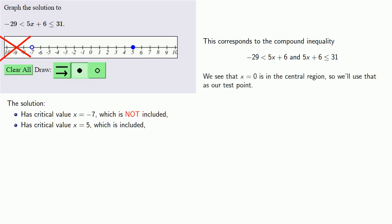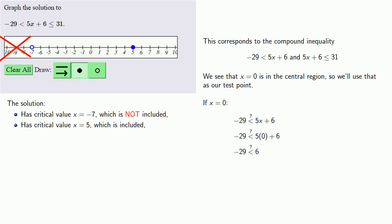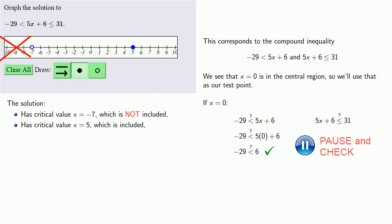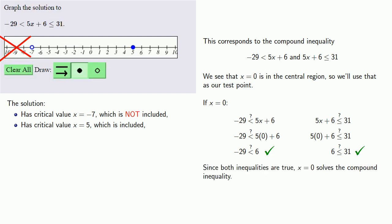x equals 0 is in the central region, so we'll use that as our test point. If x equals 0, is it true that minus 29 is less than 5x plus 6? We check it out, and this is true. But since this is a compound inequality, we also have to check our right inequality: is 5x plus 6 less than or equal to 31? This is also true. Since both inequalities are true, x equals 0 solves the compound inequality, so we include the central region.